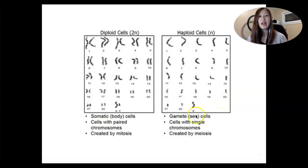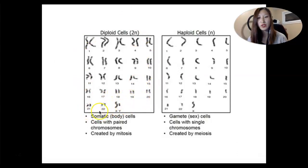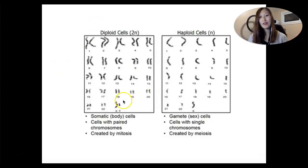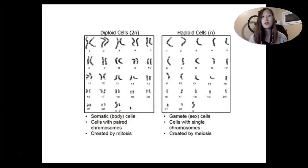When looking at a karyotype, we can also talk about autosomes versus sex chromosomes. The autosomes are the first 22 pairs, always arranged in this order. The first 22 pairs are not in charge of determining a person's biological sex. In this human somatic cell, you can tell that the sex chromosomes are X and Y, which tells us this is a male. X,X is a female.